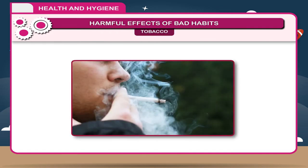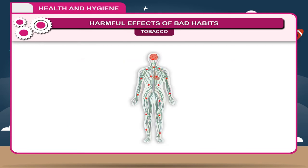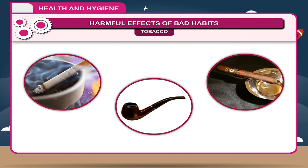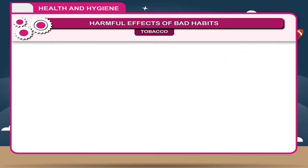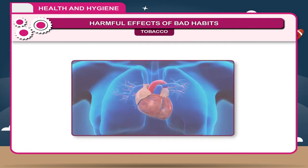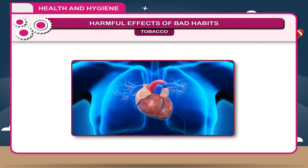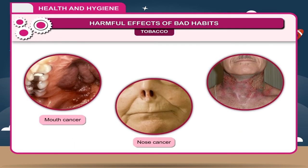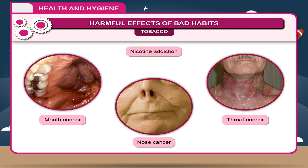Use of tobacco is injurious to health and affects the nervous system. Tobacco contains nicotine, an addictive drug. Tobacco smoked through cigarettes, pipes and cigars causes lung cancer and other respiratory diseases. Smoking also contributes to heart disease. Chewing tobacco and inhaling snuff cause cancer of the mouth, nose and throat, and can lead to nicotine addiction.